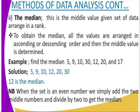We take the next one — the median. This is the middle value when a given set of data is arranged in rank order. To obtain the median, all values are arranged in ascending or descending order, then the middle value is determined. For example, we arrange the data set and the middle value is 12. When the set has an even number of values, we simply add the two middle values and divide by two to get the median.